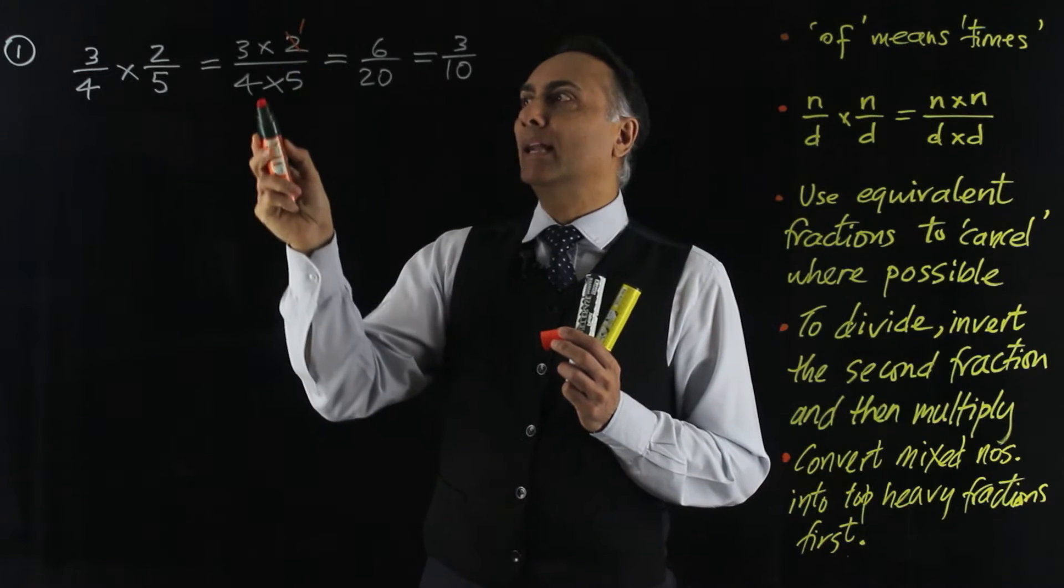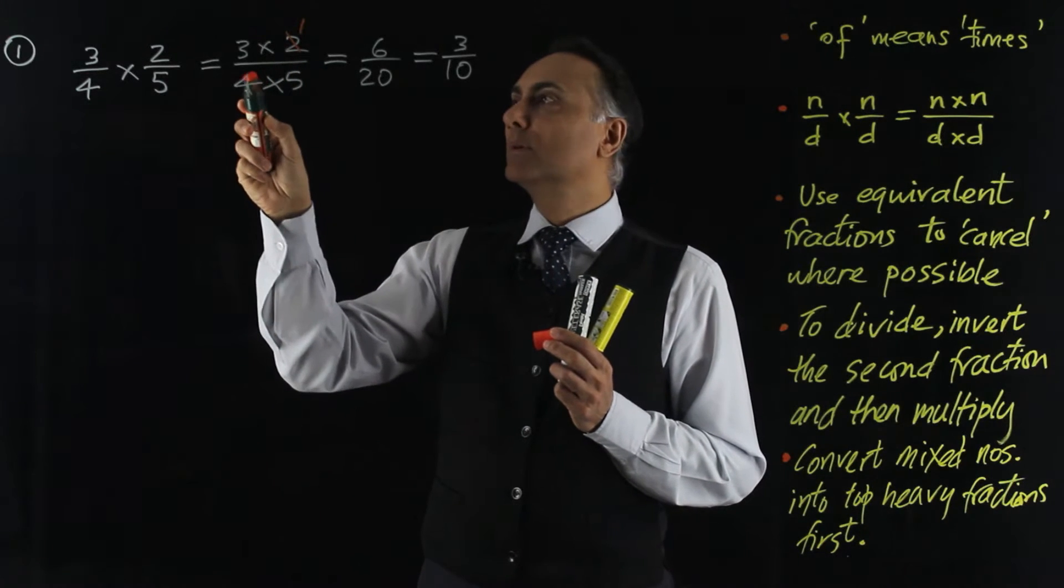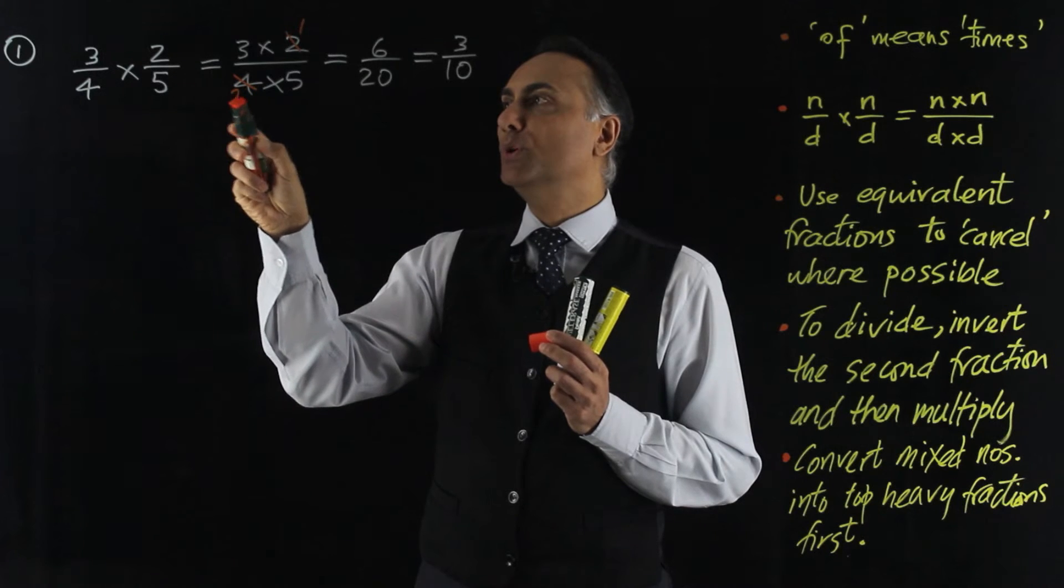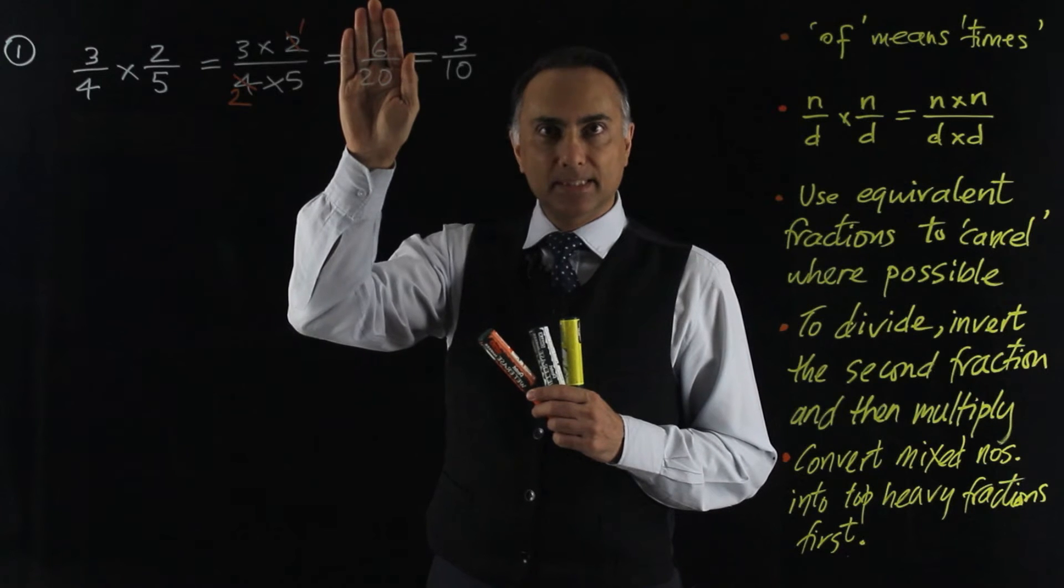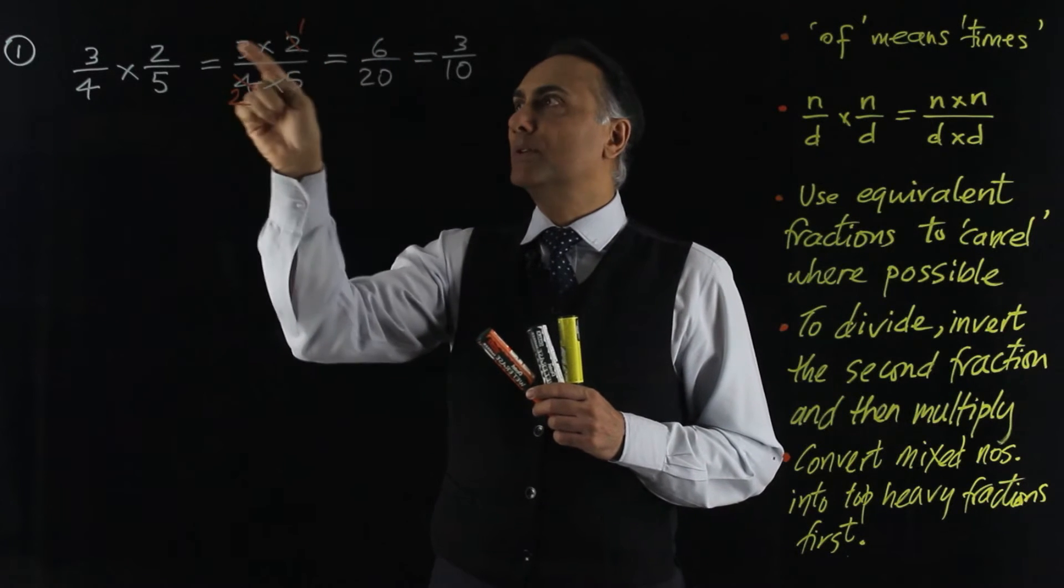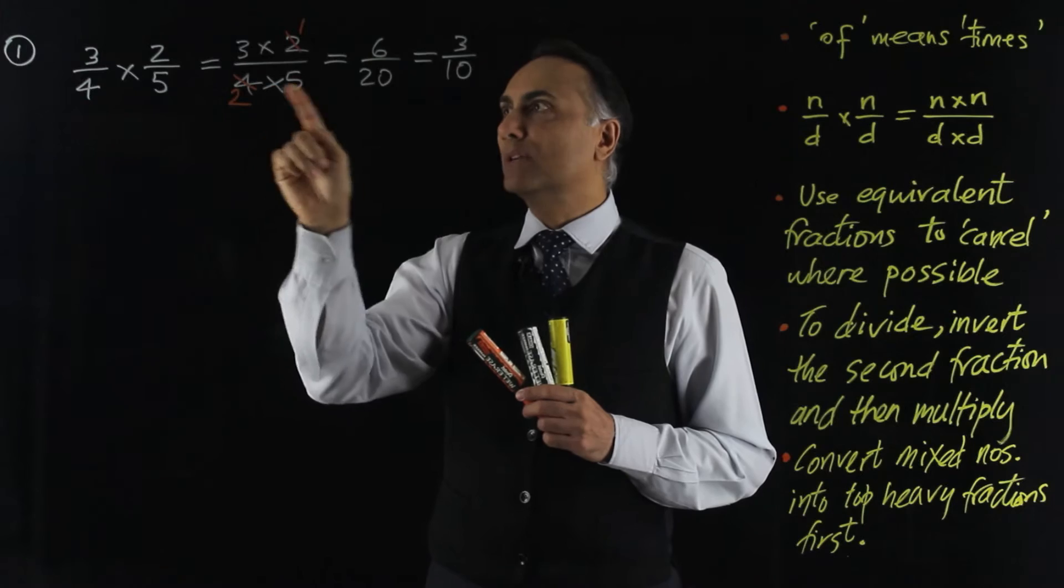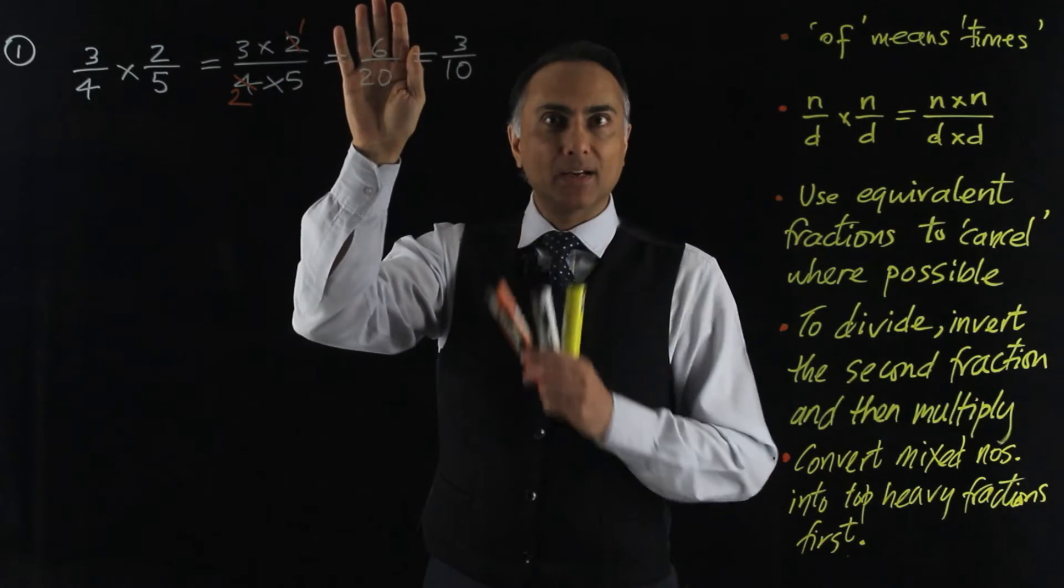which gives 1, and divide 4 by 2, which reduces it to 2. If I had cancelled at this stage, then I would have skipped this stage completely because 3 times 1 is 3 and 2 times 5 is 10 and I would have got the final answer quicker.